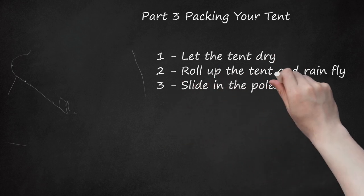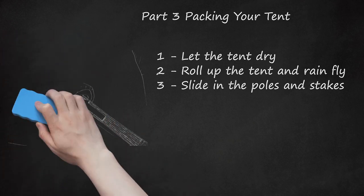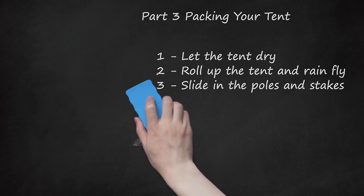3. Slide in the Poles and Stakes. After you stuff in the tent and the rainfly, slide the poles and the stakes into the side of the other materials, being careful not to catch the metal on the side of the tent and tear it. Sometimes the stakes and the poles will have separate bags to help you keep them together.